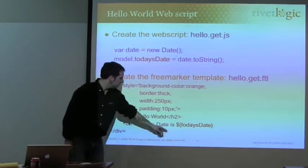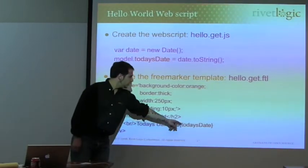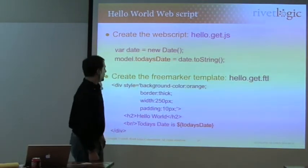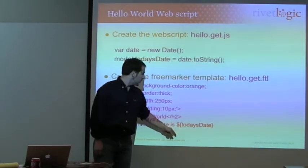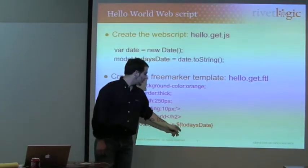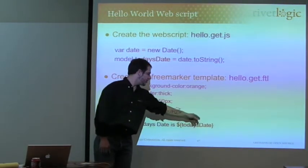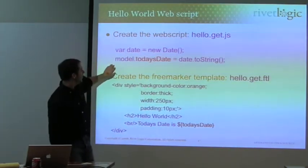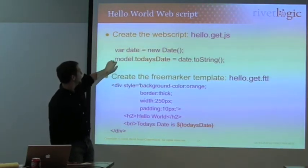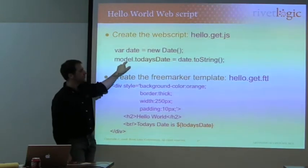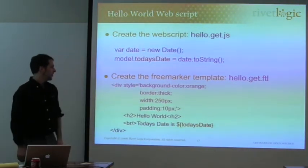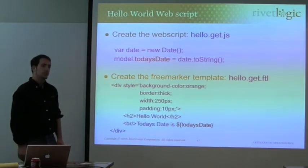In FreeMarker, to access a variable within the model, you just say dollar sign, open curly bracket, today's date, close curly bracket, and that's it. You don't have to mention the word model — in fact you don't mention model at all. It's all taken care of for you.